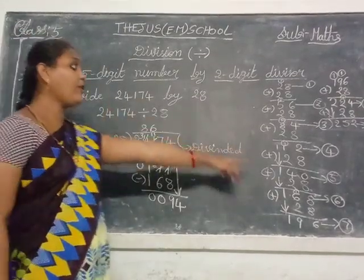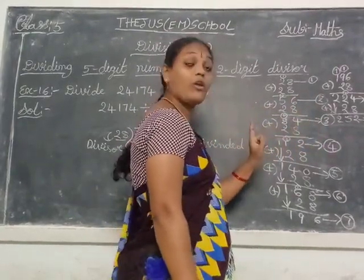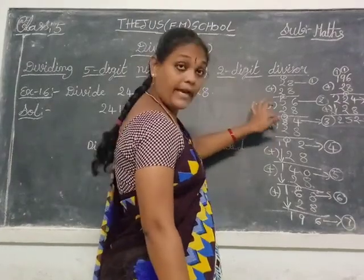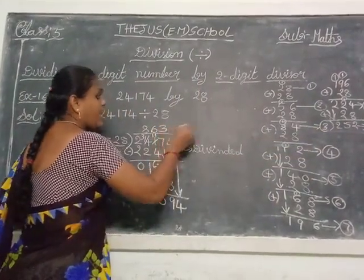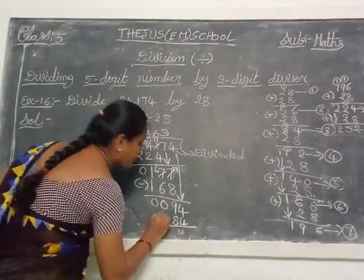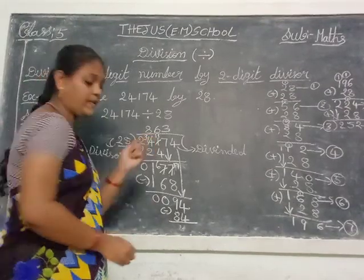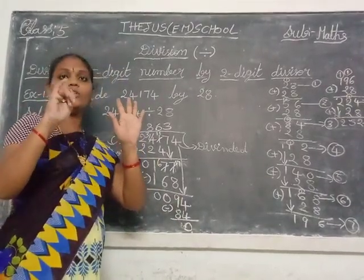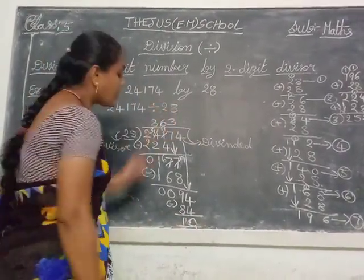In the 28 table, is 94 there? Check: 1 times 28 is 28, 2 times is 56, 3 times is 84, 4 times is 112. 84 and 112 — is 94 in between? Yes. 112 is too big, not possible. So the nearest number is 84, which is 3 times. Write 3 in the quotient and write 84 below. Now subtract: 94 minus 84. 4 minus 4 is 0, 9 minus 8 is 1. So the remainder is 10.